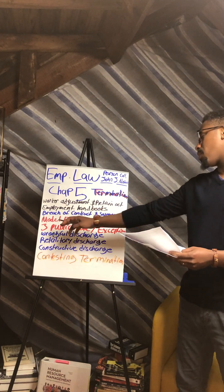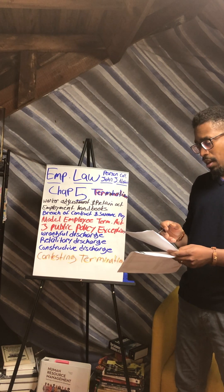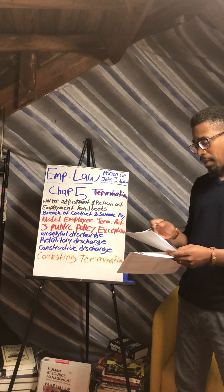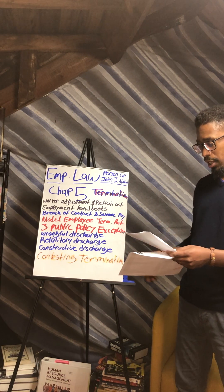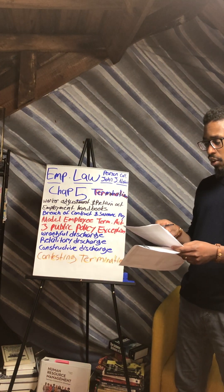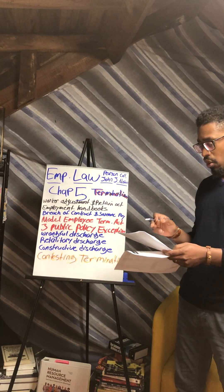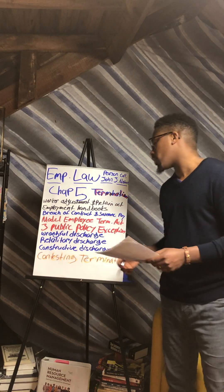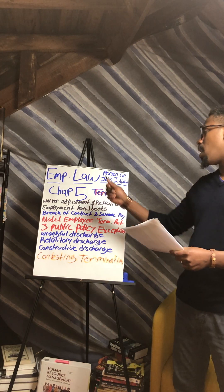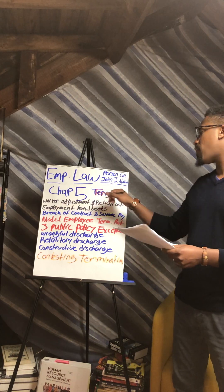Now the three public policy exceptions to at-will employment. These may include whistleblowing, testifying or filing a lawsuit for discrimination or harassment, and filing a workers' compensation claim. If an employee's termination falls under a public policy exception, they may file a lawsuit for wrongful discharge, retaliatory discharge, or constructive discharge. We'll resume with wrongful discharge in Part Two of Employment Law — Pearson Collection by John J. Moran, Chapter 5: Termination.